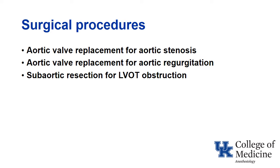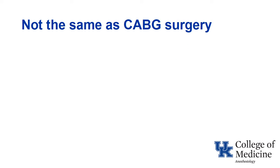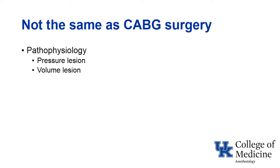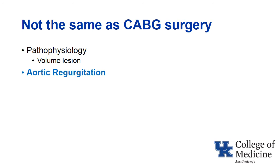The surgical procedures I'm going to discuss include aortic valve replacement for aortic stenosis, aortic valve replacement for aortic regurgitation, and subaortic resection for LVOT obstruction. Aortic valve surgery is not the same as CABG surgery — the pathophysiology is different. Most valve lesions can be considered as either a pressure lesion or a volume lesion. Aortic stenosis is a pressure lesion; aortic regurgitation is a volume lesion.